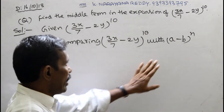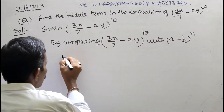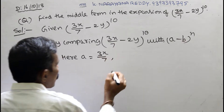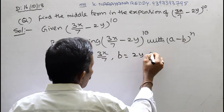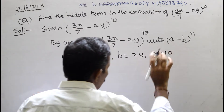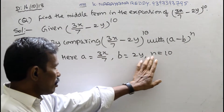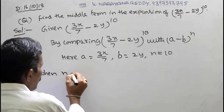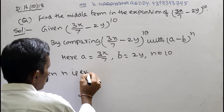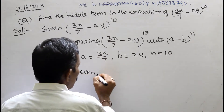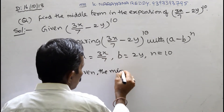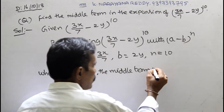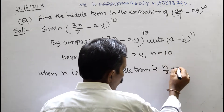Here, a = 3x/7, b = 2y, and n = 10. So n is 10, and 10 is even. When n is even, the middle term is the (n/2 + 1)th term.